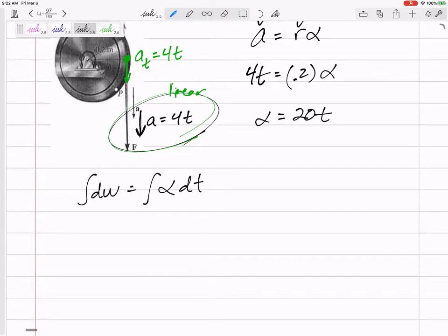All right. So here, omega, and let's call it omega minus omega initial. Don't forget this omega initial, but in this case, it was zero. And what's the integral of 20t?